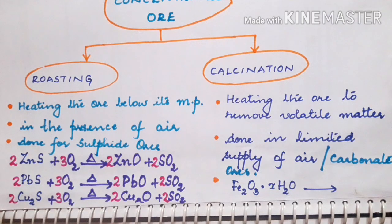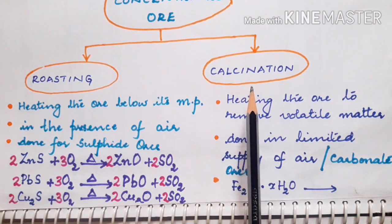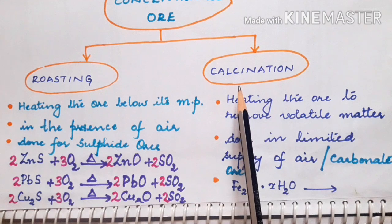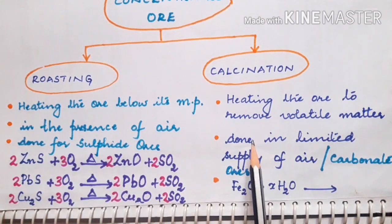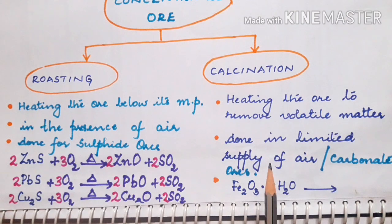If the concentrated ore is of carbonate ore, heating is done in the absence of air to remove the volatile impurities and the carbon dioxide present in it. That process we call calcination. Calcination means heating the compound in the absence of air or limited supply of air wherein all the volatile impurities are removed from the compound.